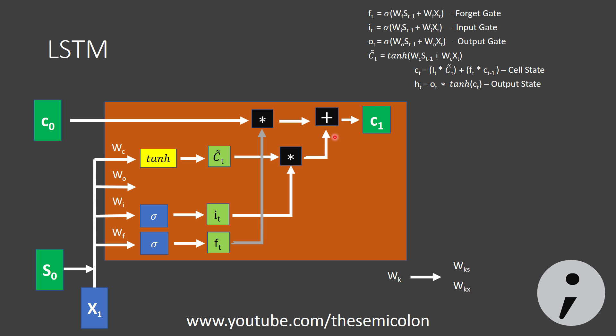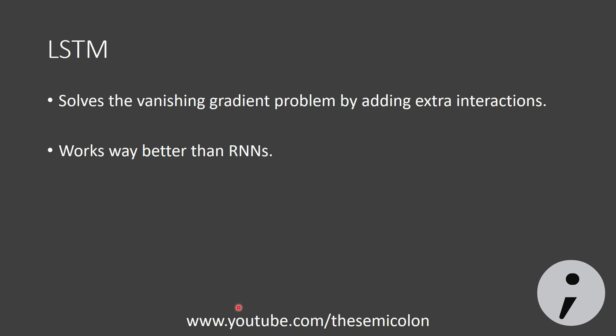Then, we calculate the output gate and multiply it with the cell state passed through the tanH activation. And, this gives us the new state S1. The new cell state and the state is passed over to the next time step so that they can use it for further calculations. This is LSTM. It solves the vanishing gradient problem in this way and works better than RNN in terms of accuracy.